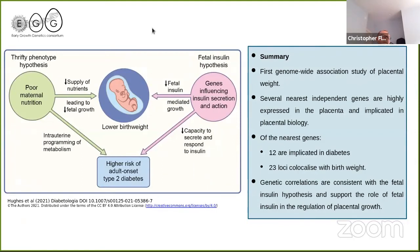The opposing effects we are seeing in relation to type 2 diabetes in the ADCY5 gene are in line with the fetal insulin hypothesis. This hypothesis suggests that lower birth weight and adult-onset type 2 diabetes are two phenotypes of the same genotype. Insulin is a key intrauterine growth factor, and genes that influence decreased fetal insulin — causing lower birth weight — also affect the capacity to secrete and respond to insulin later in life, increasing the risk of type 2 diabetes in adulthood.